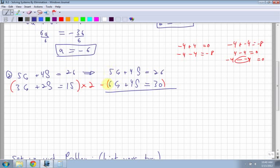So I subtract. 5 minus 6 is negative 1g. 4 minus 4 is 0. Gone. 26 minus 30 is negative 4. So what's my g equal to? Divide by negative 1. So g is actually equal to 4. All right. Am I done? Almost. I just got to plug my g back into one of the equations. Again, it doesn't matter which one. It's up to you. Let's use the second one.